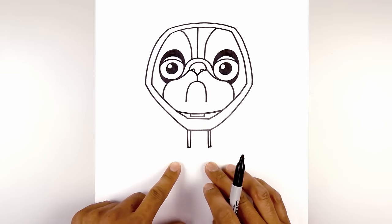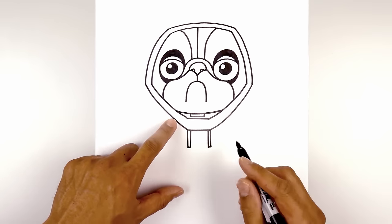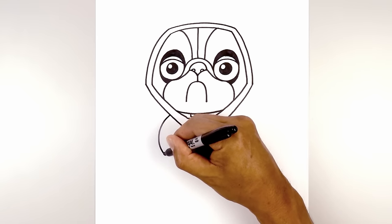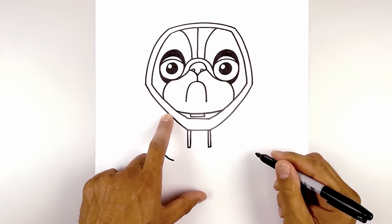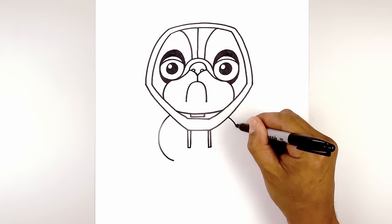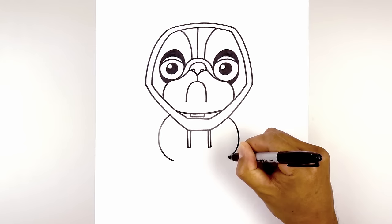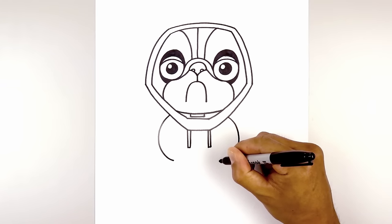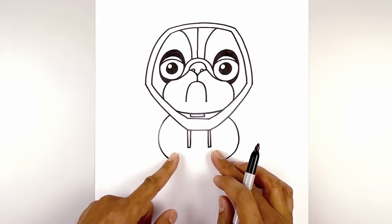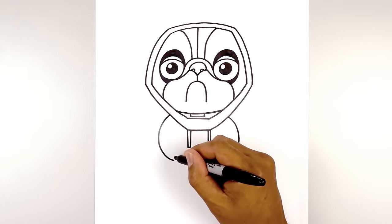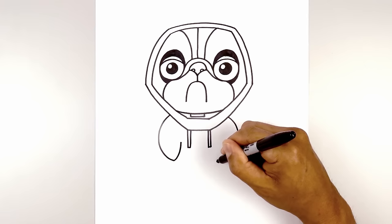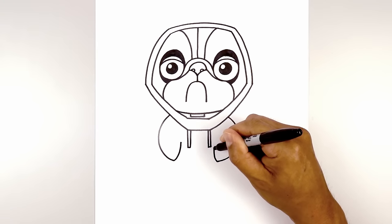Now we're going to have the arms tucked inside the pocket. Starting on the left side of the head, we're going to round out the arm, going out and then pulling that back in. Line this up on the right side and do the same thing — curve out, round out the arm, and then pull that back in. We'll draw the inside edge of the pocket, curving in and then up on both sides.